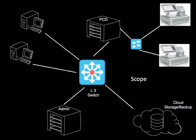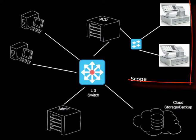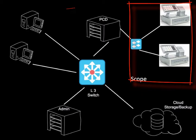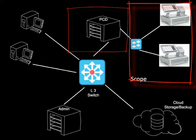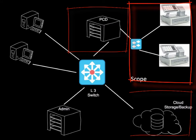When conducting self-assessments or seeking a third-party certification of compliance, every business accepting, processing, or storing payment card information must define the scope of the assessment. The scope includes all networks over which payment card information is transmitted and devices attached to those networks. PCI DSS 3.2 ensures backup and restore networks and cloud services are included in the assessment scope.